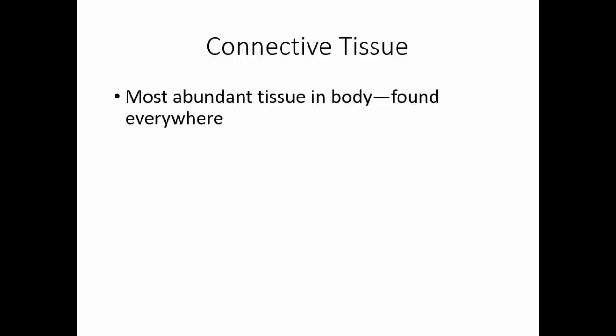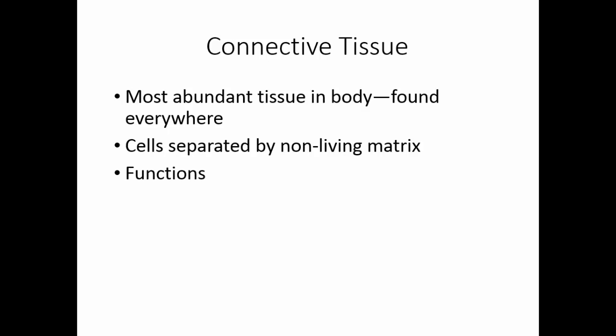The second kind of tissue is connective tissue. This is the most abundant tissue in the body because it's found absolutely everywhere. Here the cells are separated by a non-living matrix, unlike epithelial tissue where the cells were all tightly packed together. Connective tissue functions to bind materials in the body together, support structures, act as an insulator, help transport materials, and store material in the body.